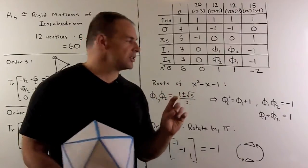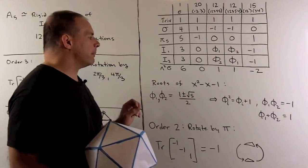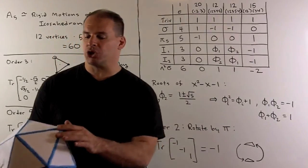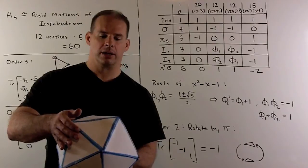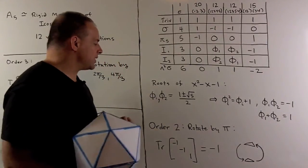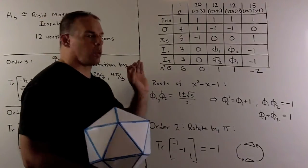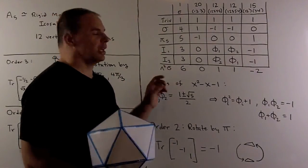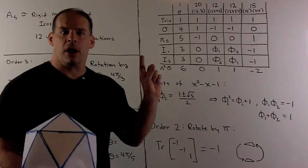For computations, what do I need to know about these two roots? If we square them, we get 1 plus our root back. If we take the product, we get −1. If we take the sum, we get 1. For elements of order 2, I take a triangle, a plane that bisects the triangle, and rotate by 180 degrees. With respect to the right basis, the transformation has a matrix with trace −1. We should check our orthogonality relations. We also note we have a check on the simplicity of A5: if we had a proper normal subgroup, we would be able to get an irreducible character where the value at the identity equals the value at some other point in our character table.